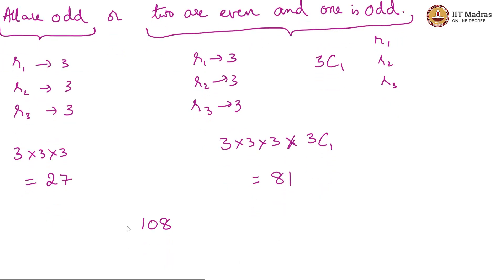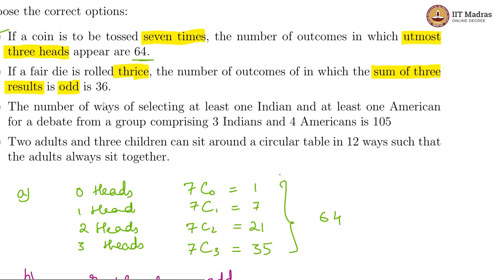The sum is then 27 plus 81, which is 108. But here they are saying it is 36, which is not true. So, this is not true.